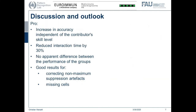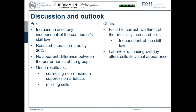Looking at the discussion and outlook: we saw an increase in accuracy independent of the contributor's skill level. We also saw a reduced interaction time by 30%, which was very interesting, as there was no significant performance difference between the groups — meaning it's not necessary to employ highly specialized experts for this task. We saw good results for correcting non-maximum suppression artifacts and reintroducing missing cells. However, two-thirds of the artificially increased grade classifications were not corrected, and this was independent of skill level. Also, LabelBox added a shading overlay over the boxes, which interfered with the annotation and made the classification process somewhat harder.